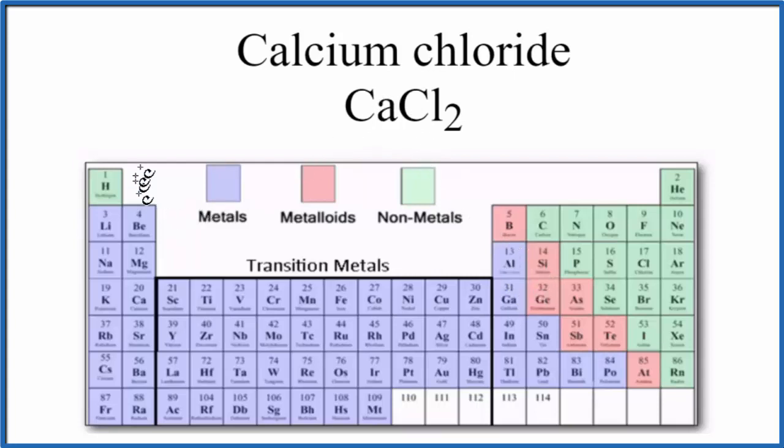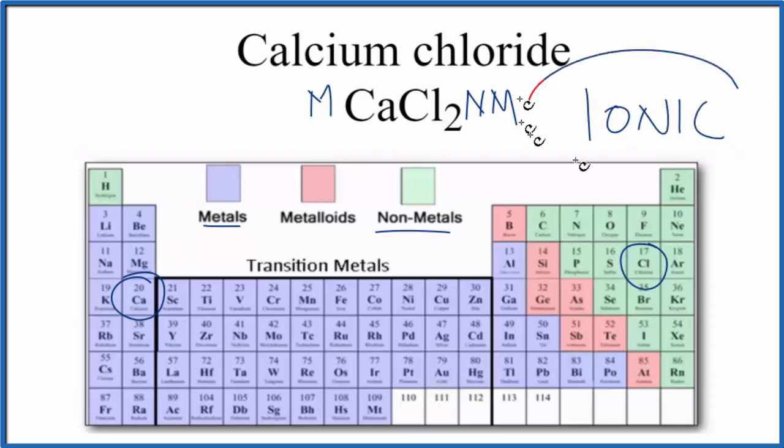So calcium right here in group 2, that is a metal. And then chlorine over here, that's a nonmetal. So we have a metal and nonmetals. That is going to be an ionic compound.